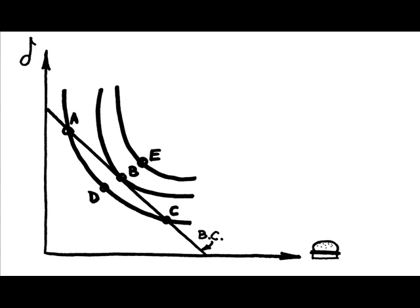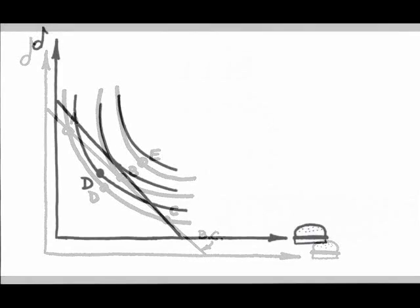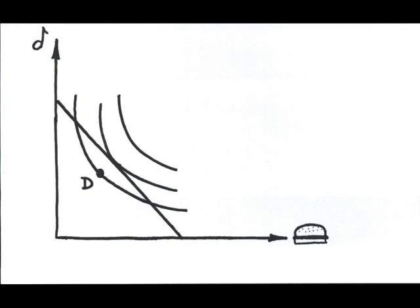The consumer will choose point B. This is the highest possible utility level that's achievable for this consumer given this particular budget. Why not choose a point like D? Well, point D does not yield maximum possible utility because not all the income is being used. The consumer could reach a higher utility level by using the rest of the income for additional consumption.